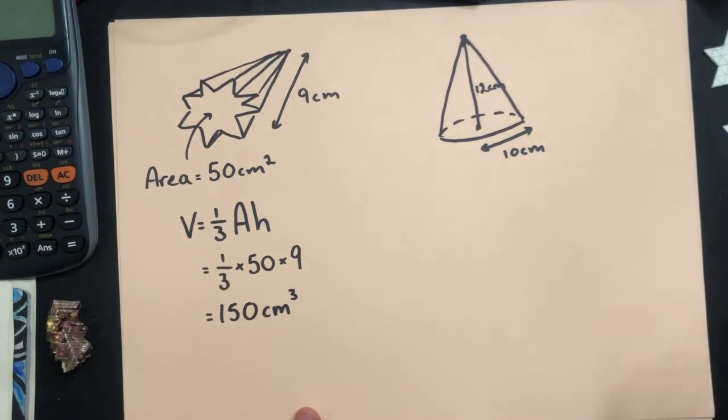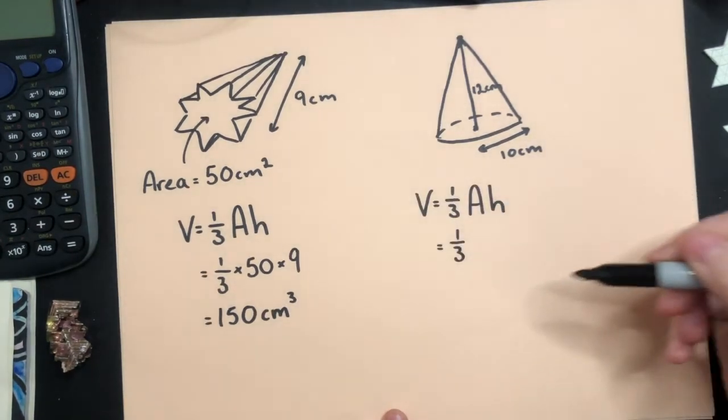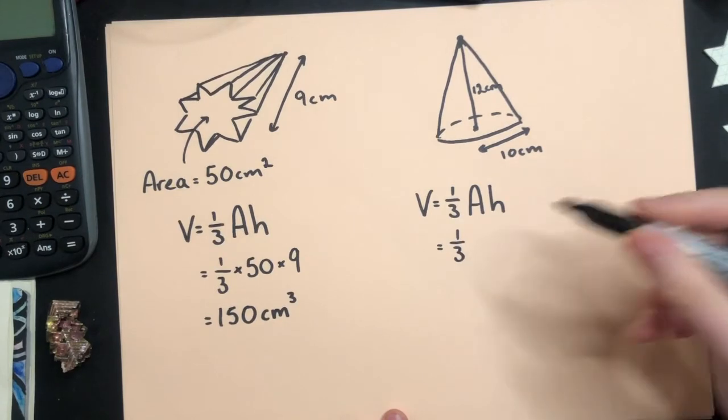Onto this cone here, we are not given the area of the face. So we can work that out as a separate sum, or we can do it as part of our regular sum. I'm going to start with the formula. One-third is just a number, so that stays the same. For the area,